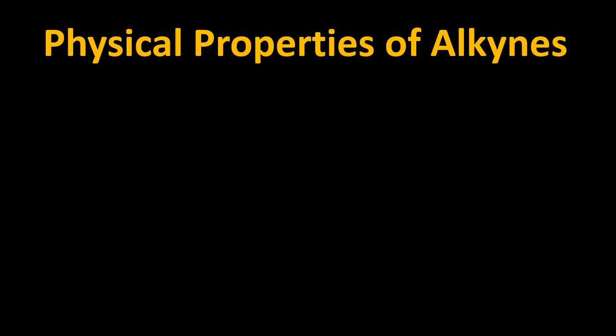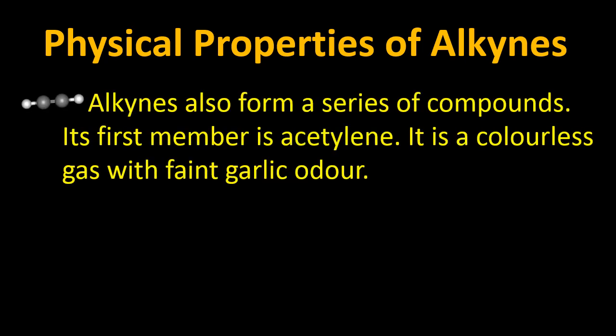Physical properties are those properties which can be judged by the five senses — simply by watching, smelling, tasting, listening, or touching. So whatever the condition is, if it can be judged by any of the five senses, it will be named a physical property. Alkynes can form a series of compounds. The first member is acetylene — a colorless gas with a faint garlic odor. Since we can smell it, this is a physical property.